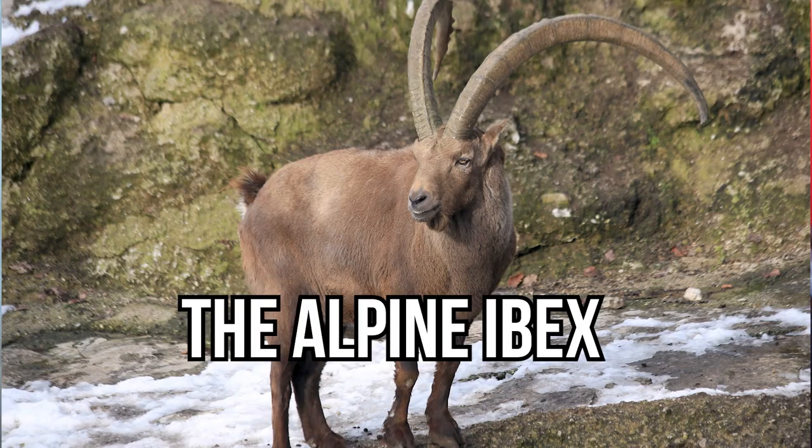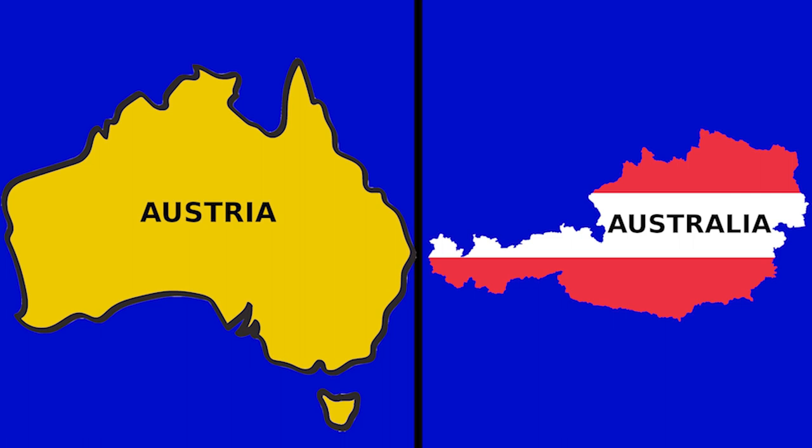A question for you: which animal is native to Austria? The answer is the Alpine Ibex. That's right. If you said kangaroo then you are wrong — no apple strudel for you. The names Australia and Austria look similar but they are very different.